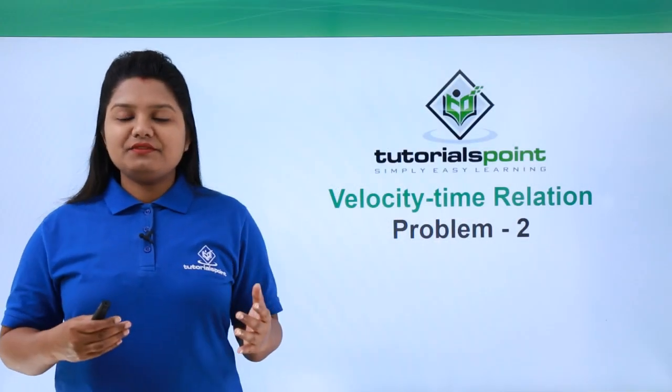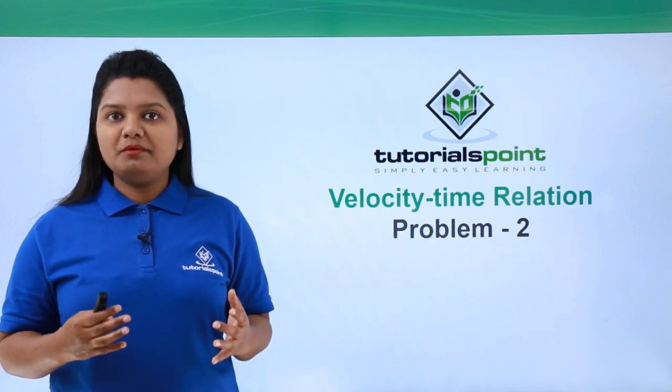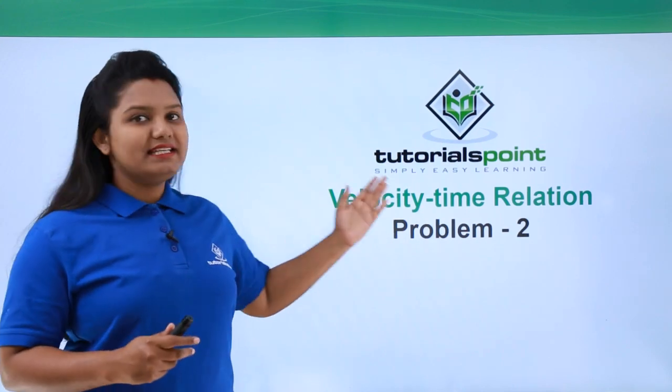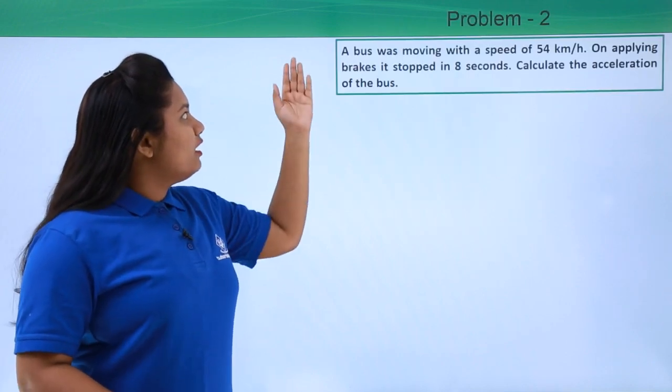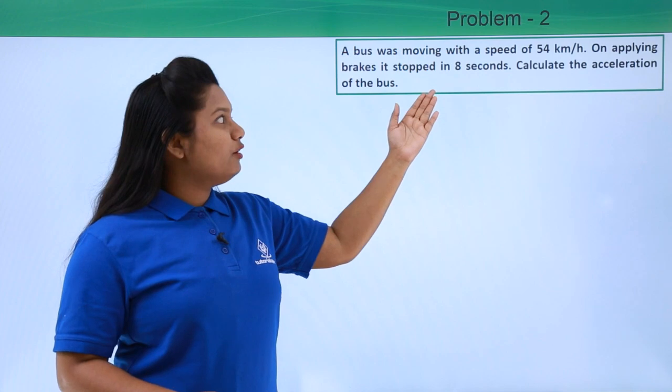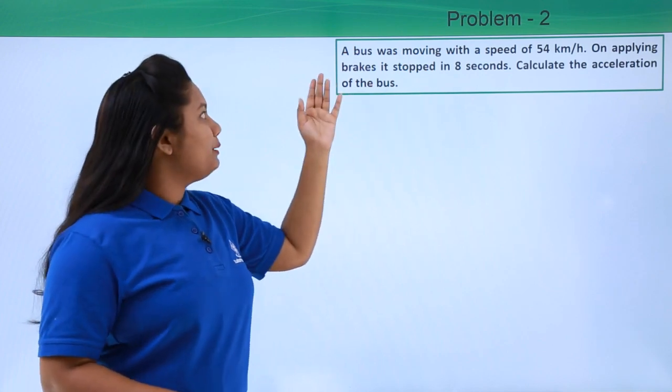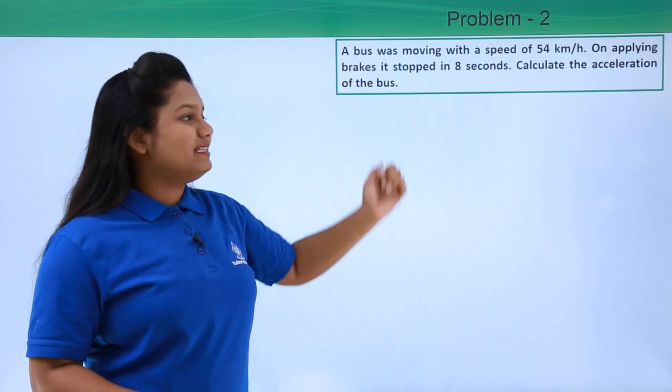Hello everyone, in this video we'll be solving another problem based on velocity-time relation. The problem reads: a bus was moving with a speed of 54 kilometers per hour. On applying brakes, it stopped in eight seconds.